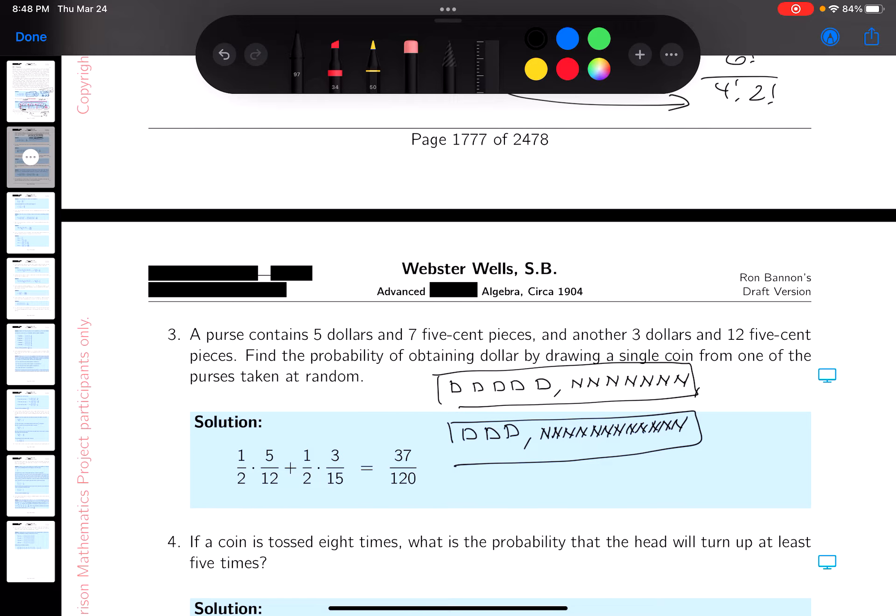Right? So then the question comes is, find the probability of obtaining a dollar by drawing a single coin from one of the purses taken at random. So I'm going to say, if you're going to take them at random, there's a half of a chance that you'll take it from the first purse and a half of a chance you'll take it from the second purse. Right? So you may grab this purse, you may grab that purse. It's a half chance. It's random.